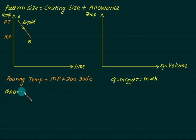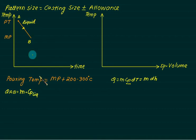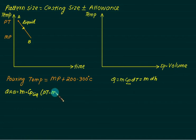So for this region, we use mass m multiplied by Cp. Cp of what? Liquid state — so I have to use the liquid-state Cp. From what temperature? The pouring temperature minus the melting point.